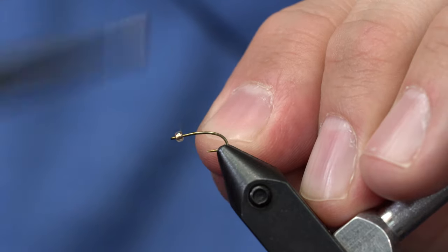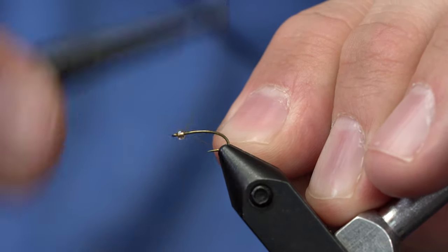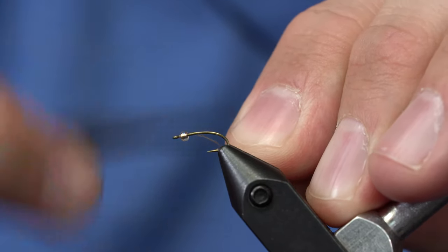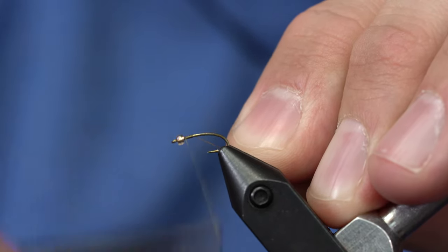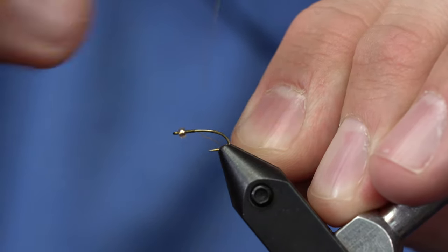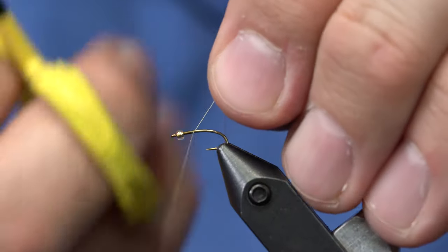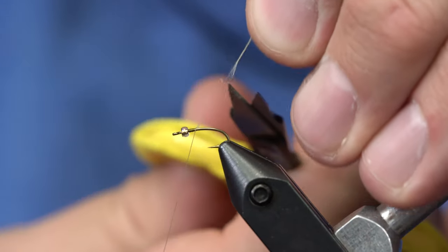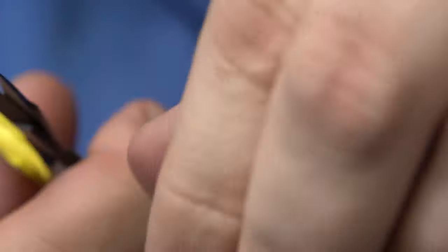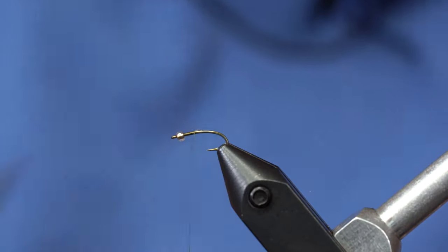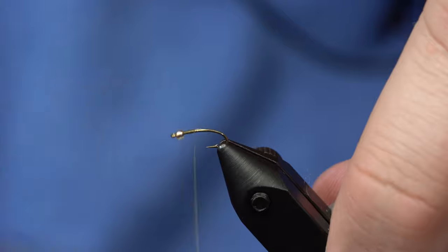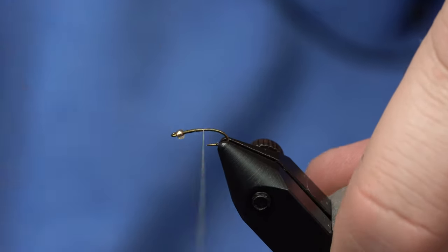I'll just start my thread right behind the glass bead and I'll put several turns of thread behind that. The GSP or the nano silk is very slick and so you have to put several turns of that on before you let go of your tag end.